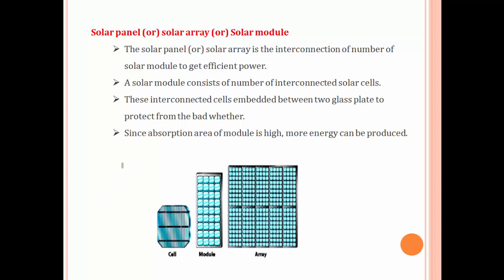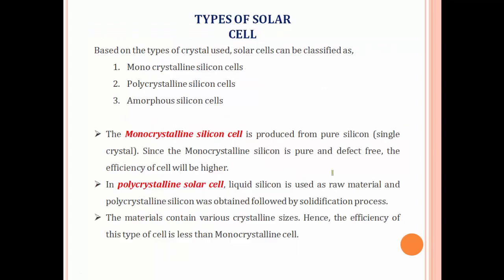A solar module consists of a number of interconnected solar cells. Individual cells are connected together to form a module, and modules are connected together to form an array. Since the absorption area of a module is larger, more energy can be produced. As the area increases, we can produce a greater amount of energy.